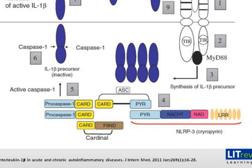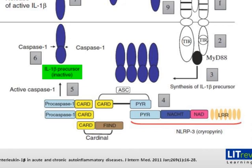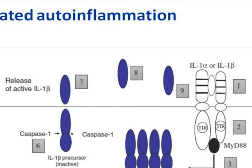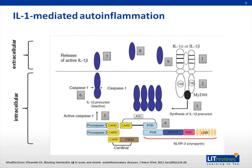In number 5, this large complex — the inflammasome — activates pro-caspase-1 to caspase-1, which then cleaves the inactive IL-1 beta precursor and forms the active form of IL-1 beta at number 6. At number 7, this is secreted to the extracellular space. Numbers 8 and 9 show that the newly formed IL-1 beta can go back to the receptor and repeat the loop — this positive amplification loop. The main problem with these patients is that the loop cannot be turned off spontaneously; you have to use medicines to do that.